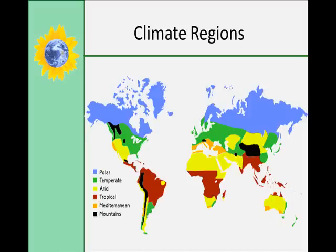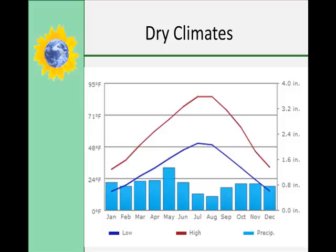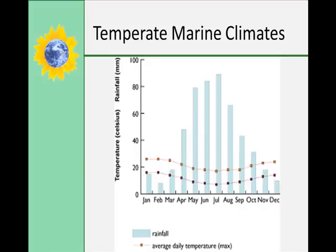Climate regions are classified according to combinations of temperature and precipitation. Climates in highland regions change rapidly as altitude changes. Dry climates include arid and semi-arid climates. There are three types of temperate marine climates: marine west coast, humid subtropical, and Mediterranean.